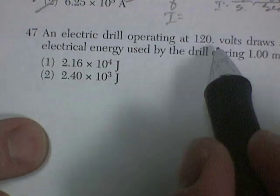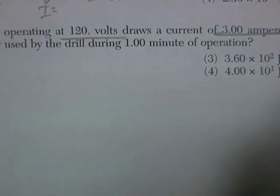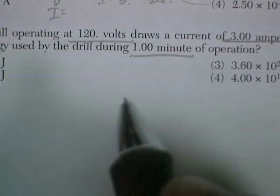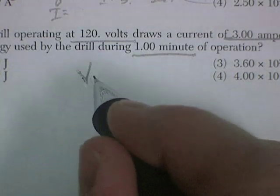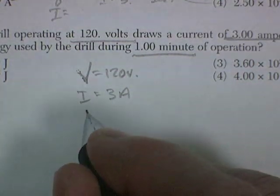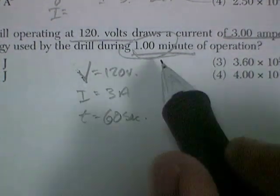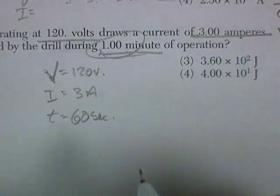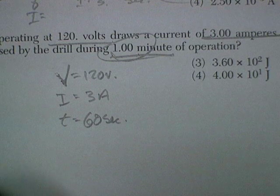Question 47. An electric drill operating at 120 volts draws a current of 3 amps, 3 coulombs per second. What was the total amount of electrical energy used in the drill for one minute of operation? So I'm going to say my voltage is 120 volts. My current is 3 amps. And my time is 60 seconds. I'm just going to go ahead and lay that in there. Amps is coulombs per second. And in order to have my units work, I've got to have my time in units of seconds.